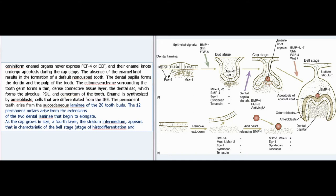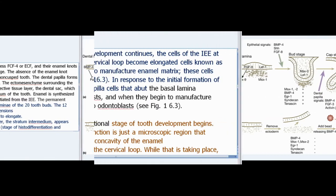The dental papilla forms the dentin and pulp of the tooth. The ectomesenchyme surrounding the tooth germ forms a thin dense connective tissue layer — the dental sac — which forms the alveolus, PDL, and cementum of the tooth. Enamel is synthesized by ameloblasts, cells differentiated from the IEE. The permanent teeth arise from the succedaneous laminae of the 20 tooth buds, and the 12 permanent molars arise from extensions of the two dental laminae. A fourth layer, the stratum intermedium, appears in the bell stage.